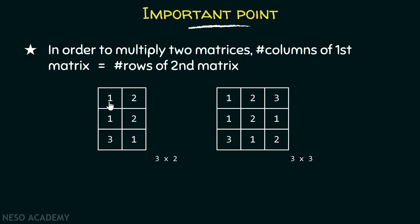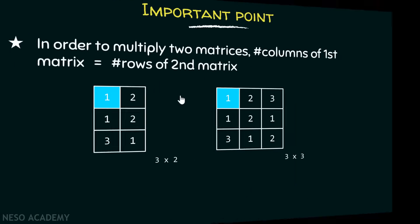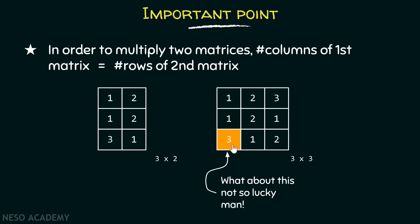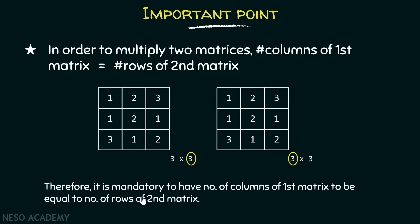But why do we impose this condition? Consider a matrix with three rows and two columns, and another with three rows and three columns. Here, the number of columns are not equal to the number of rows, so we cannot multiply these two matrices. If we try to obtain the first element of the resultant matrix, we take the first row from the first matrix and the first column from the second. We multiply the first elements together, then the second elements together. But then there is a third element in the column with no corresponding element in the row — it is isolated. That is why the number of columns must equal the number of rows before multiplying matrices.